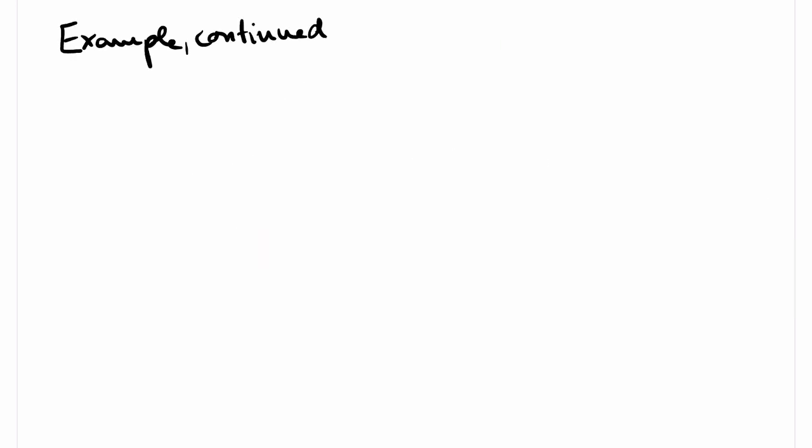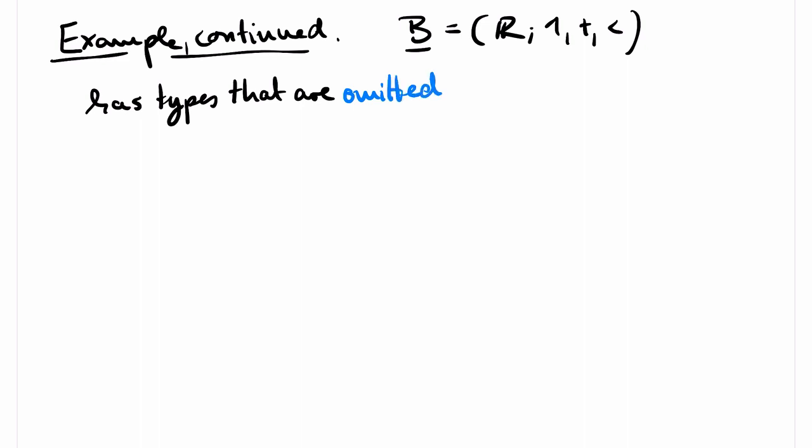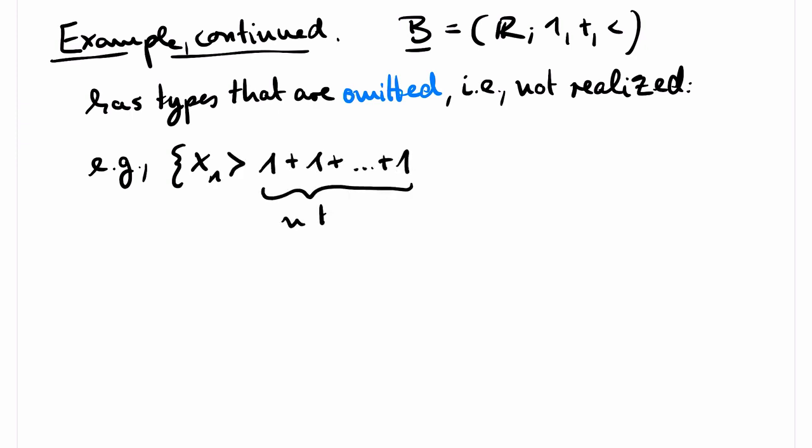Our example structure also has types that are omitted. That is, types that are not realized. For example, the type that contains for every natural number n the formula x is larger than n, where n is written out 1 plus 1 plus 1 and so on n times. Then every finite subset of these formulas is satisfiable in our structure, so this is indeed a type. But of course, this type is not realized in the structure B.